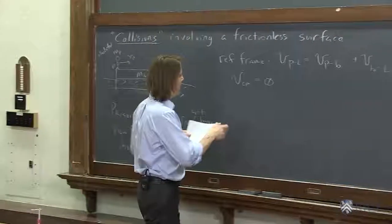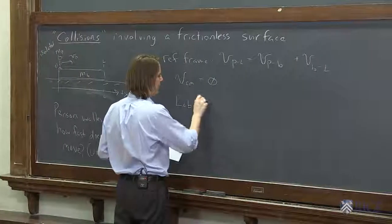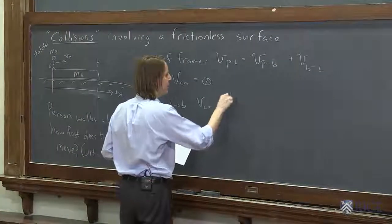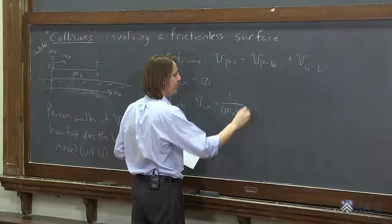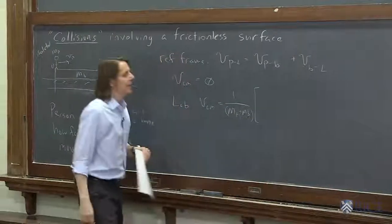So let's do that in the lab frame. Then all we got to do is say the velocity of the center of mass is one over the total mass, person plus mass of the barge, just like before.